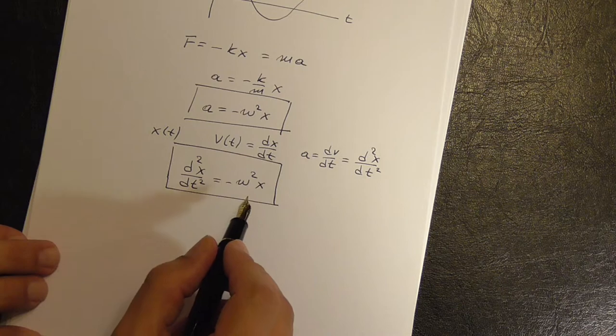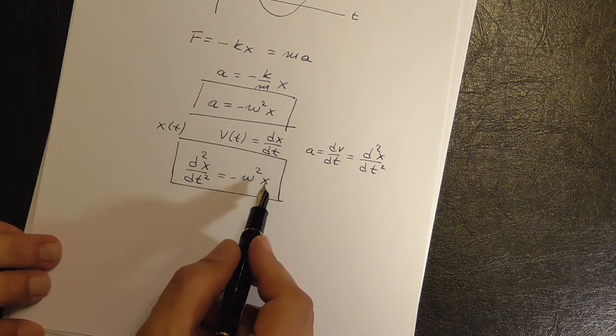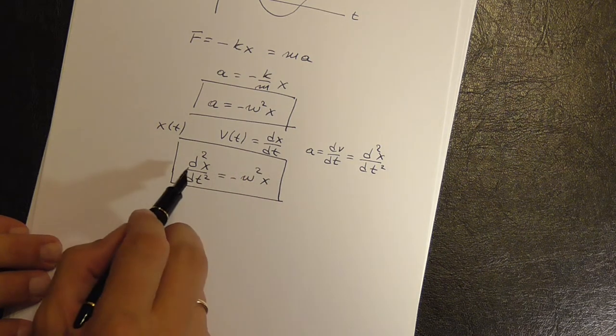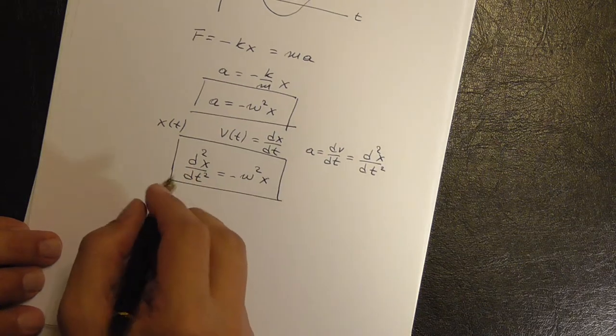And differential equations have solutions depending, of course, on their initial conditions for X and in this case the first derivative of X, the velocity. But if you try sine, for example...